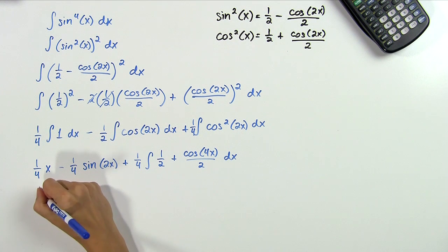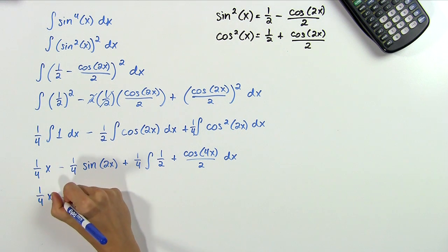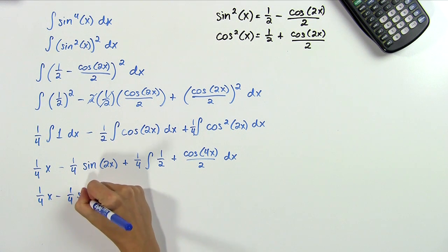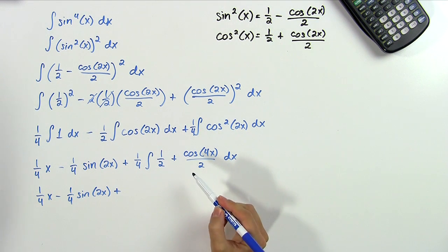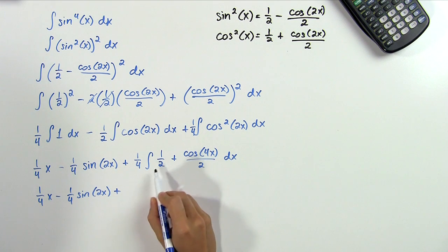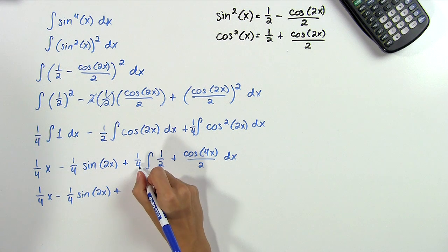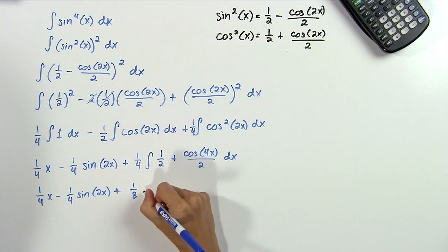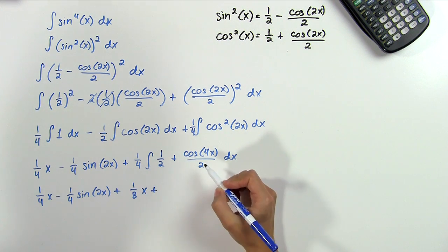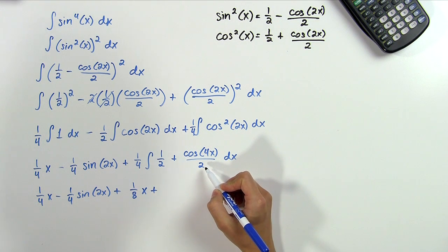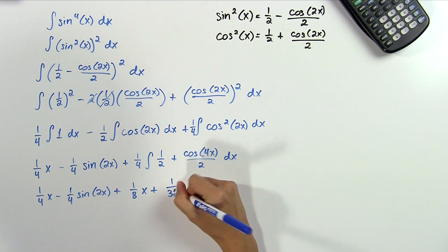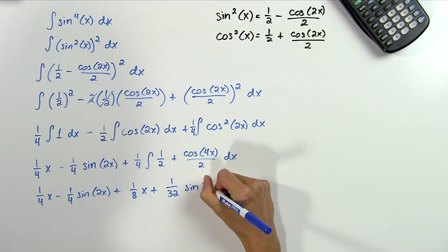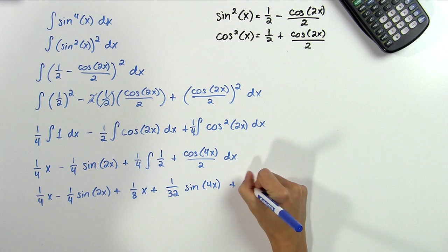In the next step, the first part stays the same, 1 fourth x minus 1 fourth minus 1 fourth sine of 2x. And we can finally integrate this integral term by term. 1 half comes out as 1 half x and times 1 fourth we end up with 1 eighth x plus here we do another u substitution with u equal to 4x and that gives us 1 32 of sine of 4x plus c.